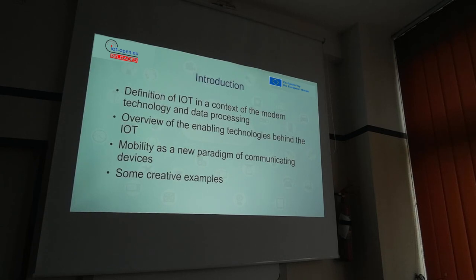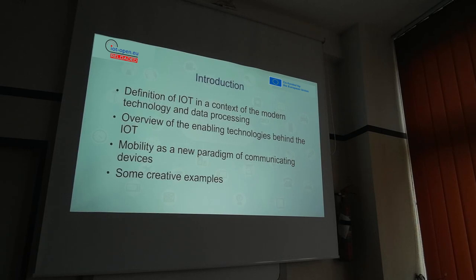Let's try to first define the Internet of Things in the context of modern technology and data processing. Then we'll go through an overview of the enabling technologies standing behind IoT — how it happened that it developed and grew so fast. Then we'll switch into mobility, which is perhaps the most important part of IoT, and then we'll go through some application examples. This is the plan for the next hour and a half.